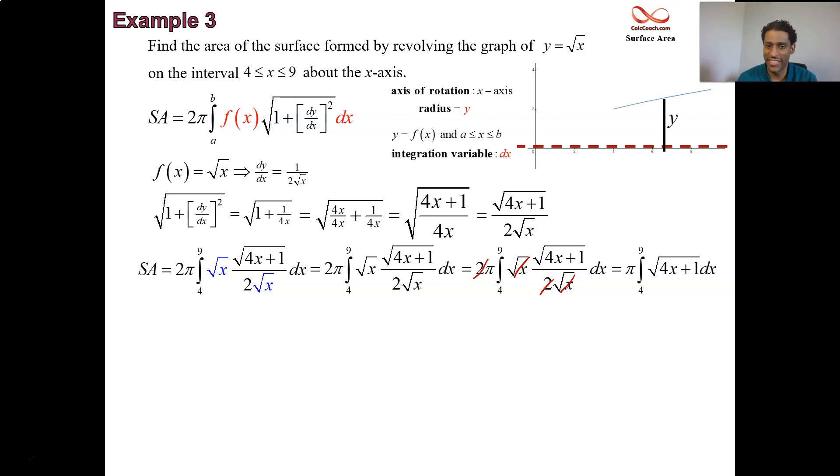4 to the 9 are the x's. A quick little u sub. I won't go through the details, but here it is for you. It's pi over 6 times that 4x plus 1 to the 3 halves. But when you put a 9 in there, it doesn't really work out to be a nice perfect square. You get a 37. When you put a 4 in there, you get a 17.